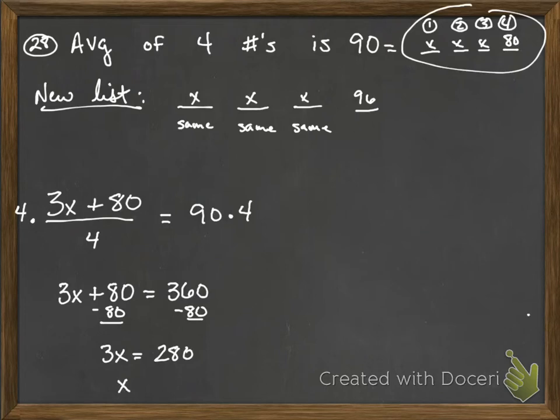We divide by three, and we can get what x actually equals. When we divide by three, we get that x equals 93.33.